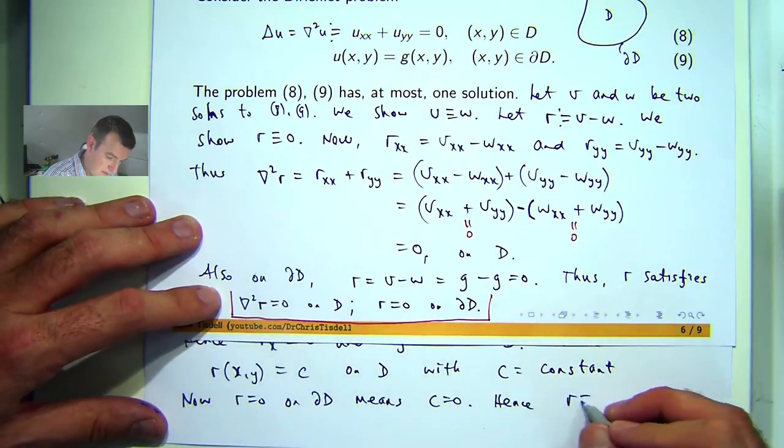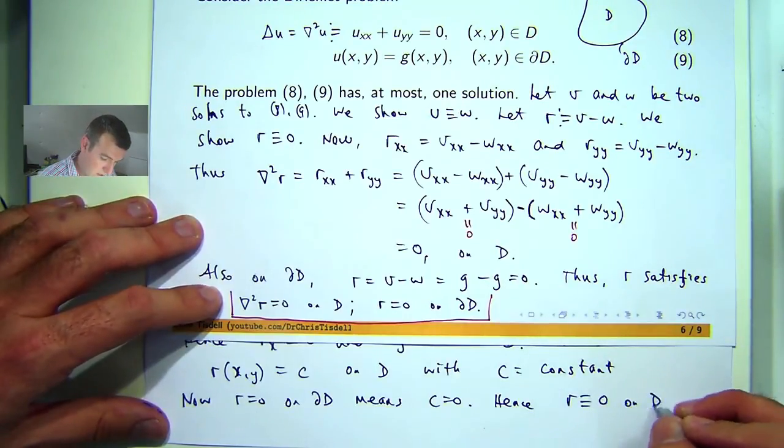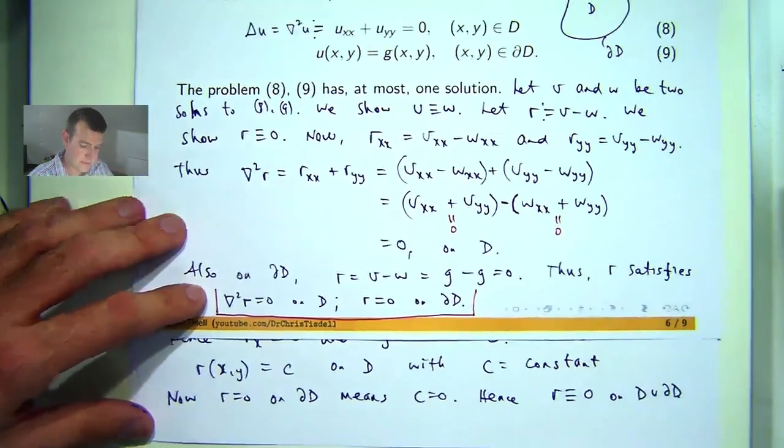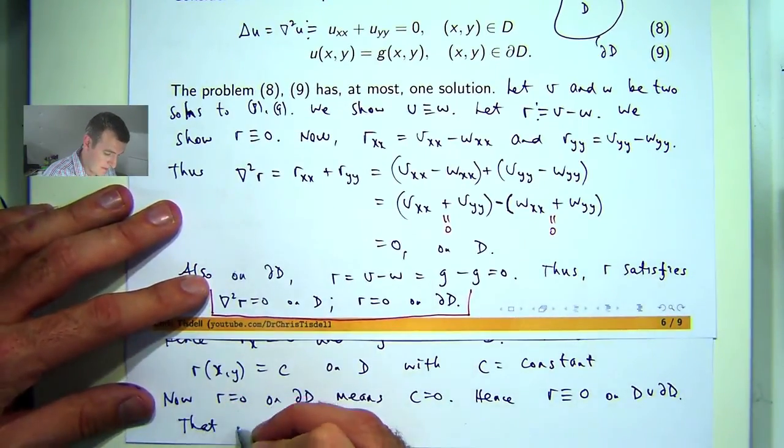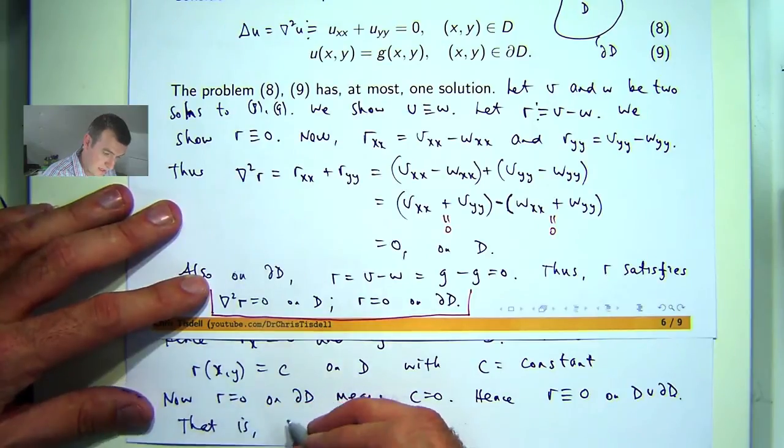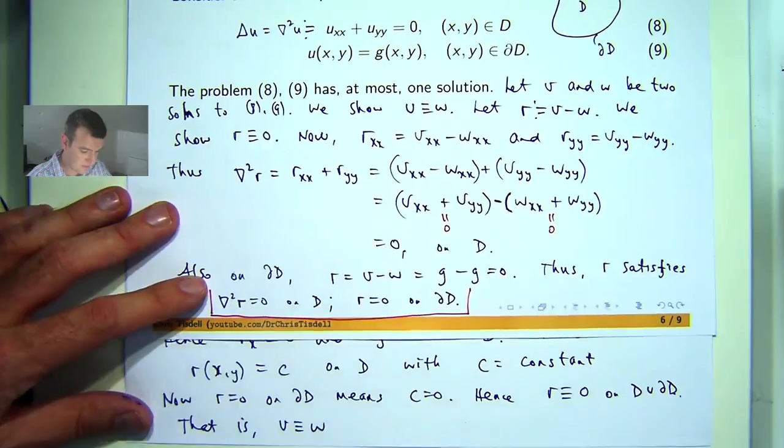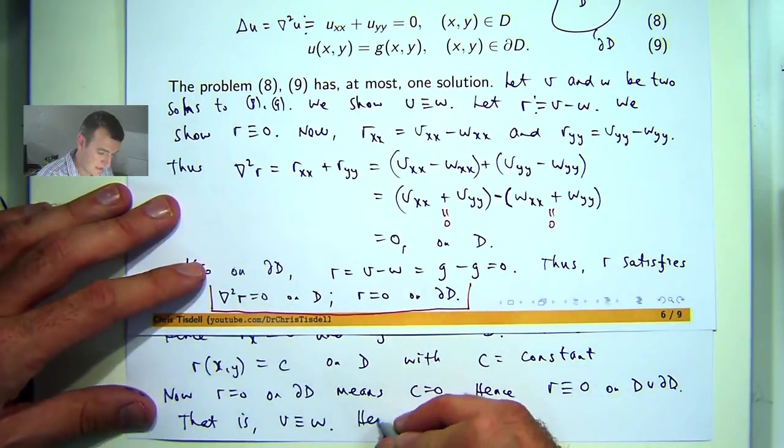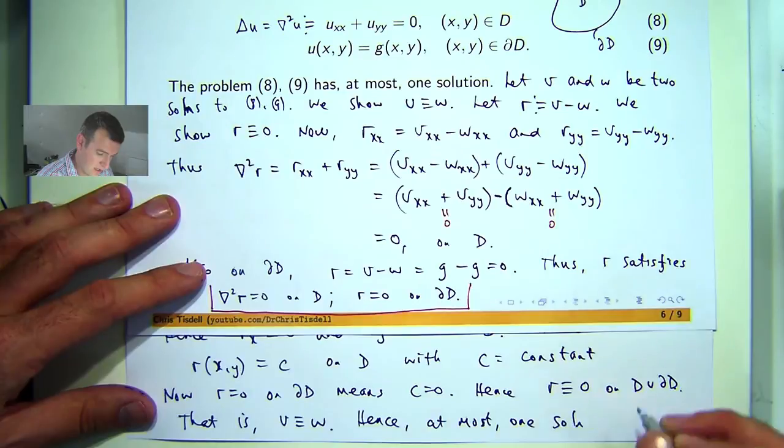Hence, R is identically equal to 0 on this union. That is, V and W are one and the same solution, hence, at most, one solution exists.